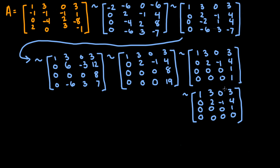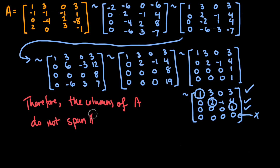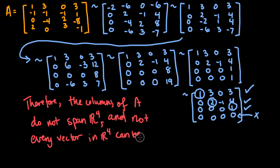Now we check every row for a pivot position. Row 1 has a pivot position. Row 2 has a pivot position. Row 3 has a pivot position. But row 4 has no pivot position. Therefore, by the theorem stated earlier, the columns of A do not span R4, and not every vector in R4 can be written as a linear combination of the columns of A.